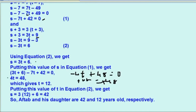Minus minus यहाँ पर cut हो जाएंगे, plus 4 को divide करने पर T equals to 12. यानि कि आफ़ताब की daughter की आज की age है 12. तो इस T को हम equation 2 में replace करें तो S equals to 3 into 12 plus 6, यानि कि 36 plus 6 equals to 42. आफ़ताब की age है 42 और उसकी daughter की age 12 years होगी.